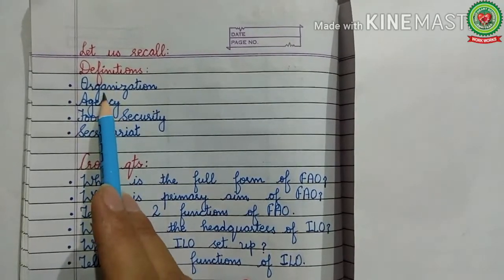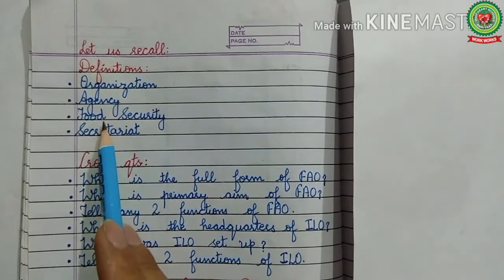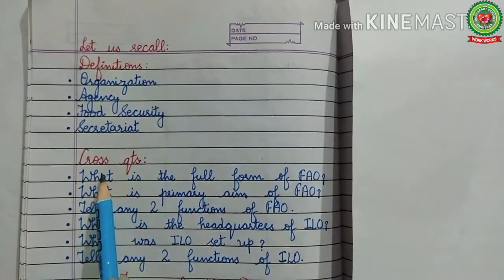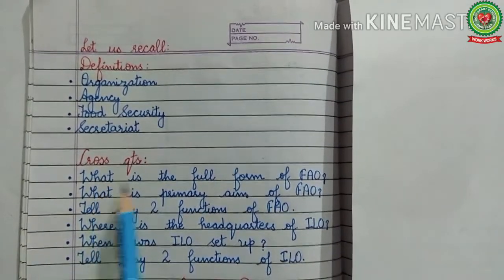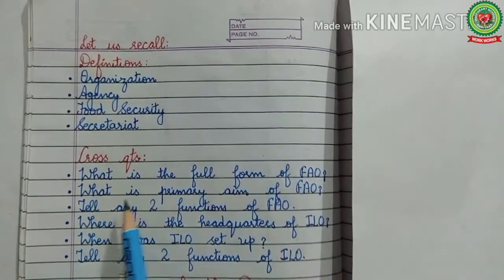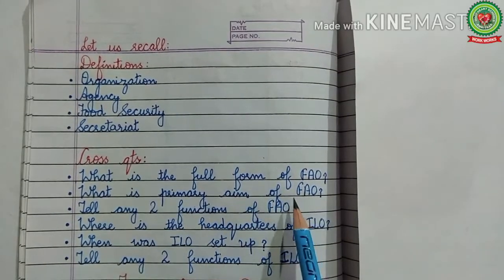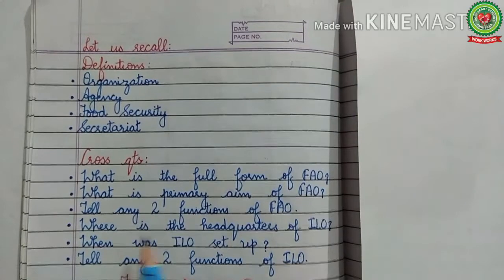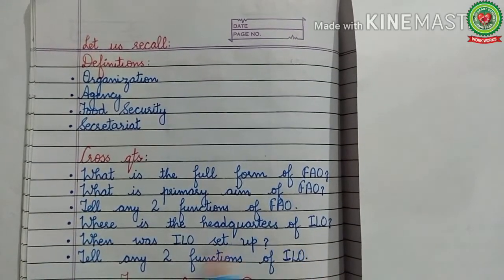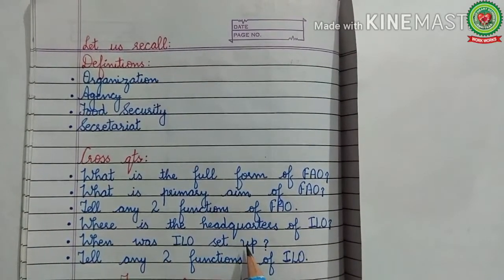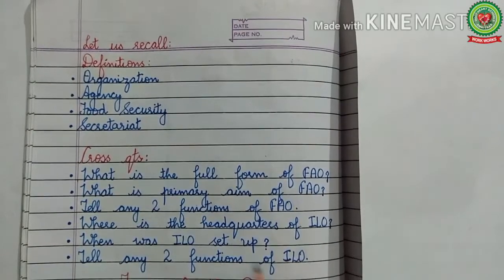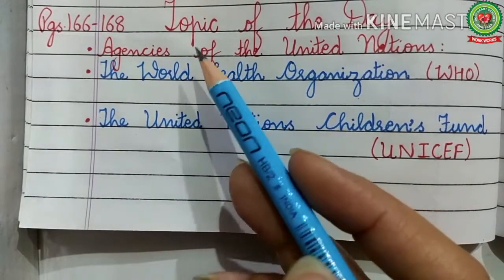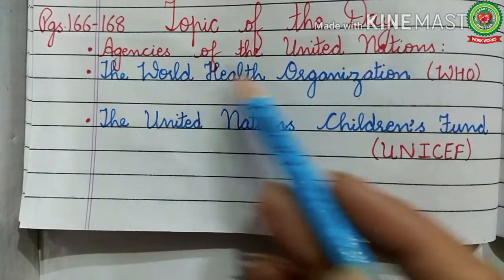Before discussing these two agencies, let us recall definitions and cross-question answers related to previous topics. Key terms include: organization, agency, food security, and secretariat. Cross-questions: What is the full form of FAO? What is the primary aim of FAO? Tell any two functions of FAO. Where is the headquarters of ILO? When was ILO set up? Tell any two functions of ILO.